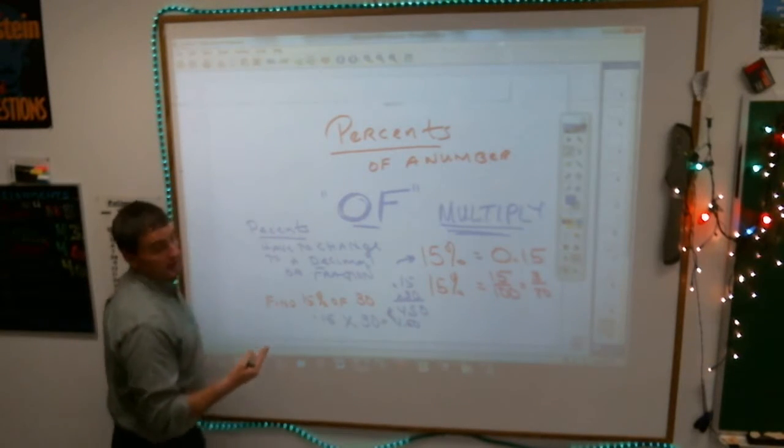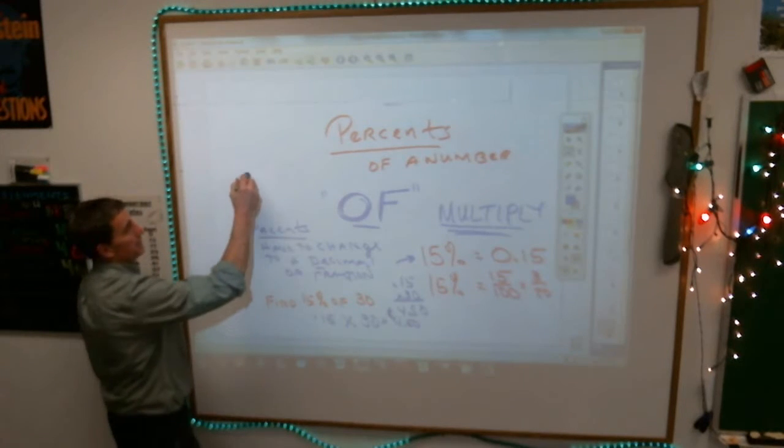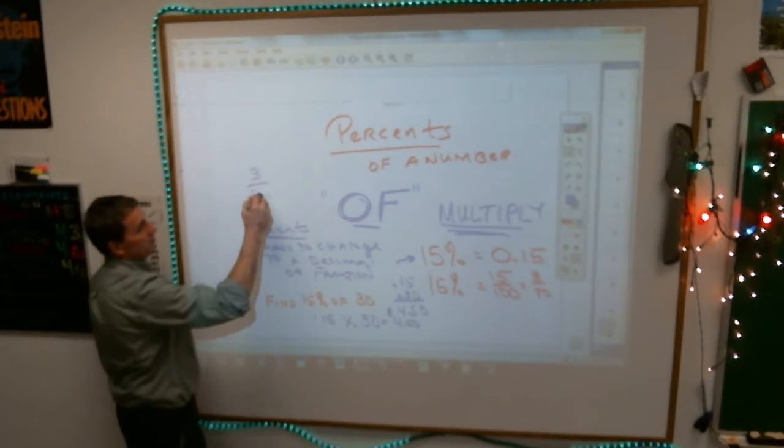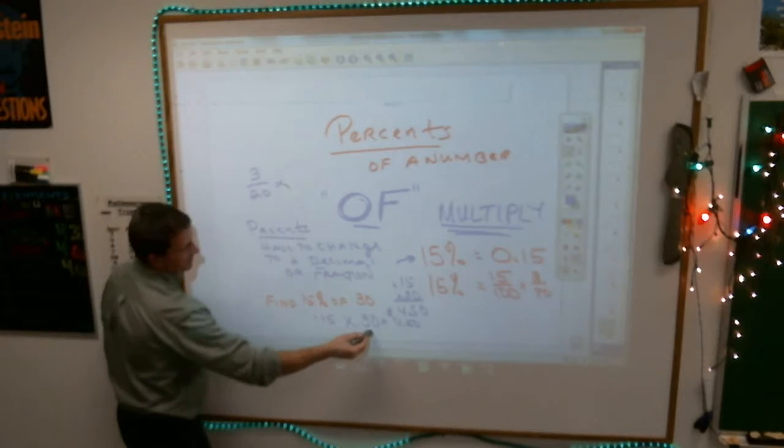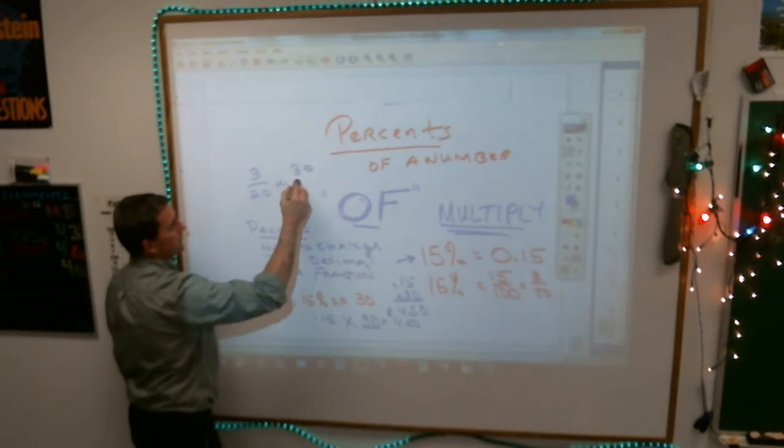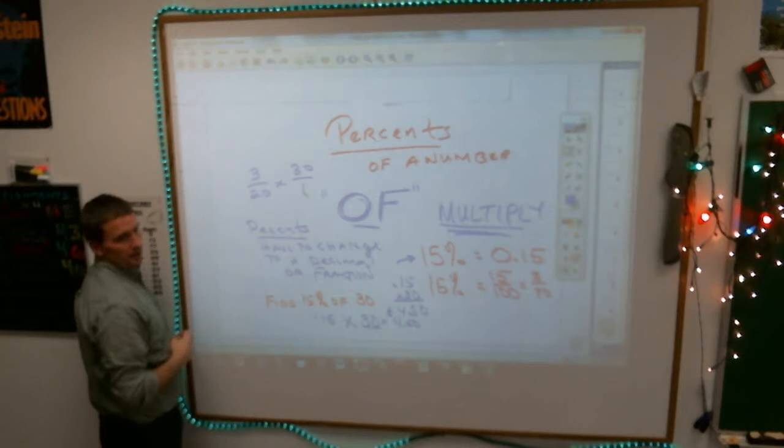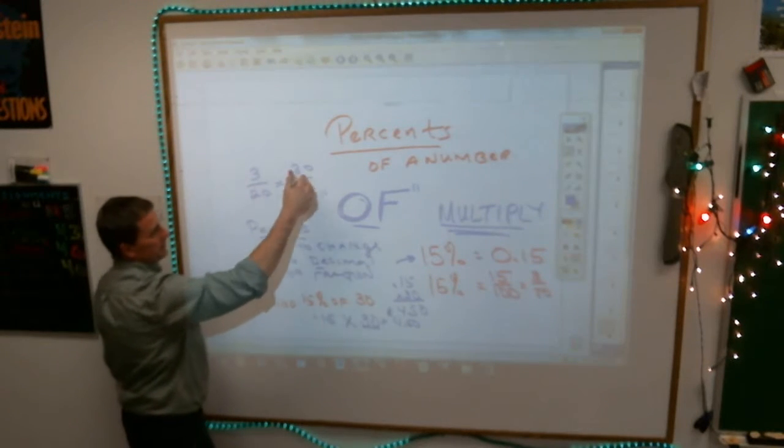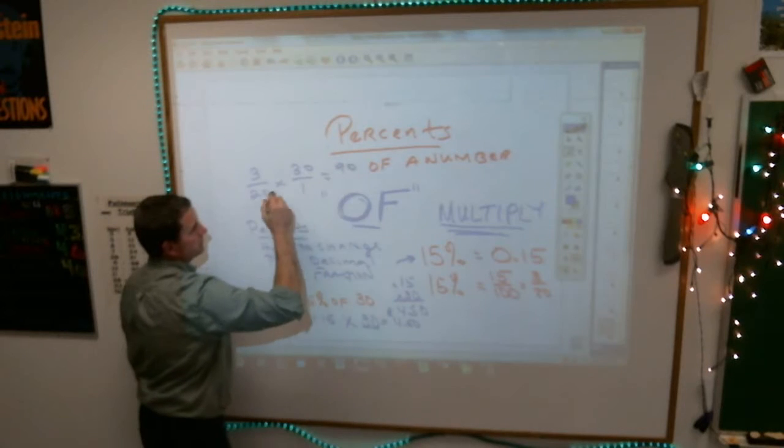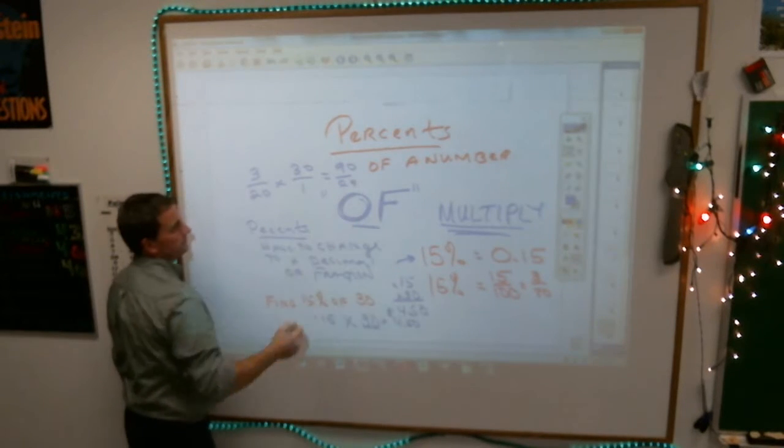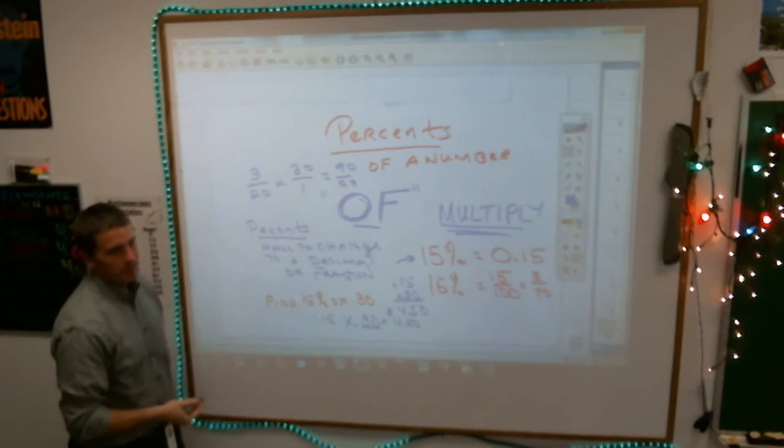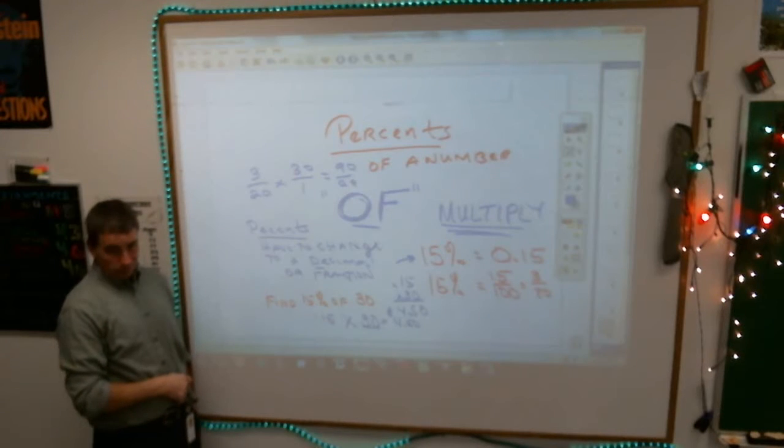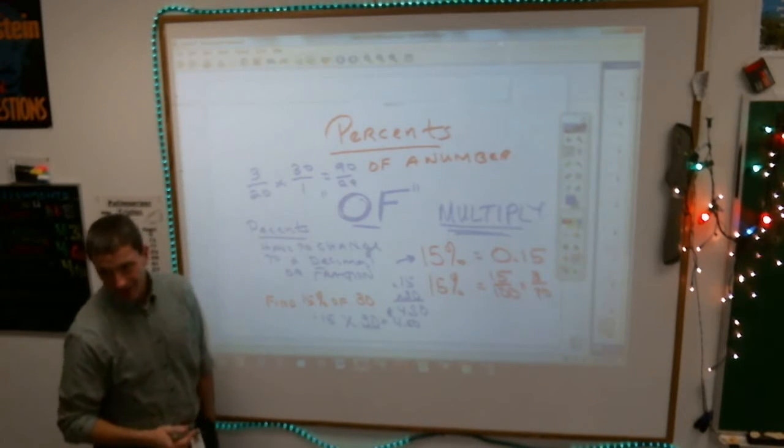If you change 15% to a fraction, it would look like this. You'd write 3 over 20 times what number? 30. How do I multiply fractions? I multiply across the tops. 3 times 30 is 90. 20 times 1 is 20. There's my fraction. I need to change it into a mixed number.